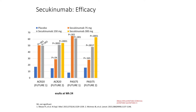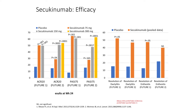Secukinumab is probably the one we have the most comfort with since it's been on the market a bit longer. In the FUTURE studies, you see both ACR-20 and PASI-75 responses. This made a big splash because it is achieving PASI-100 skin clearance scores — something we hadn't seen before. In the joints there is efficacy, but not as strong as in the skin. They've also developed better measures of dactylitis and enthesitis, and we see good resolution of those features.